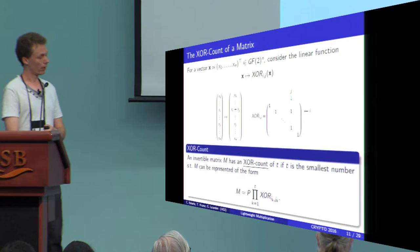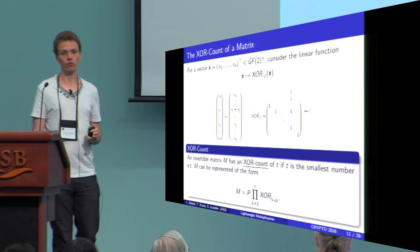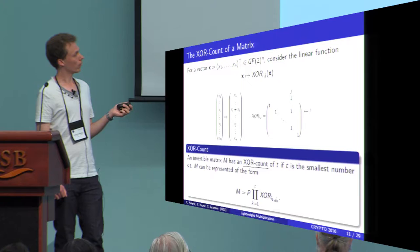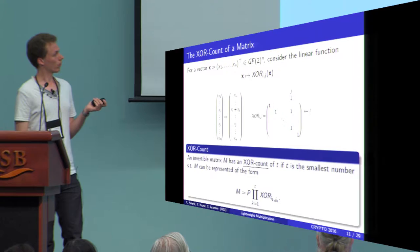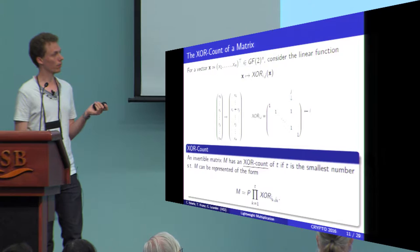We define the XOR count of an invertible matrix as the smallest number T, such that M can be represented as T of these XOR factors, and then we are free of applying a permutation matrix afterwards, because permutation in hardware does not cost any XOR operations. Note that we are also free to apply these permutation matrices after every XOR step, but without loss of generality, we can just permute at the end.